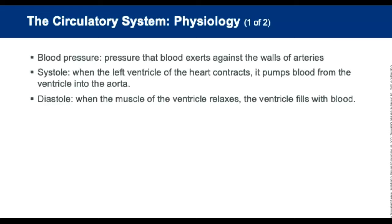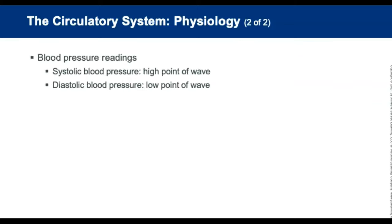Blood pressure is the pressure blood exerts against the walls of the arteries. Systole is when the left ventricle contracts and pumps blood into the aorta. Diastole is when the ventricle muscle relaxes and fills with blood. Systolic blood pressure is the high point as the heart contracts; diastolic is the low point as it relaxes. It is expressed in millimeters of mercury.